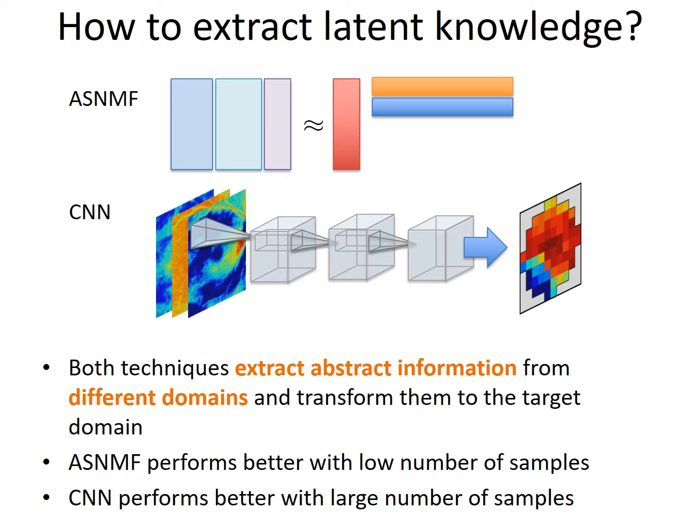Both techniques extract abstract information from different domains. While ASNMF performs better with a lower number of samples, CNN is superior with a larger number of samples.